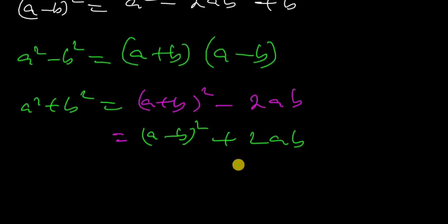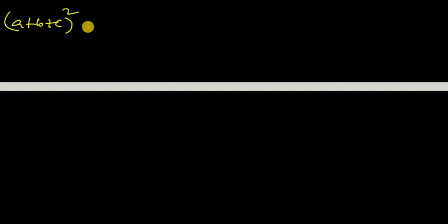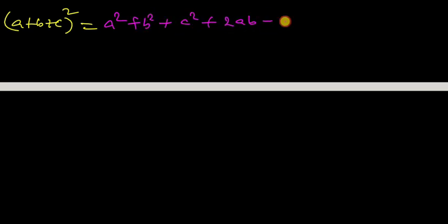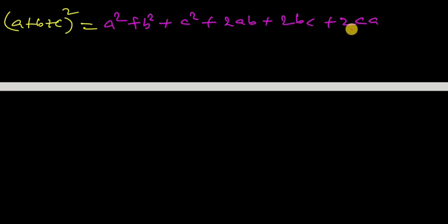Now the trinomial formula: (a + b + c) whole square. This has three terms, and it equals a squared plus b squared plus c squared plus 2ab plus 2bc plus 2ca. So (a + b + c) whole square equals a squared plus b squared plus c squared plus 2 times of ab plus 2 times of bc plus 2 times of ca.